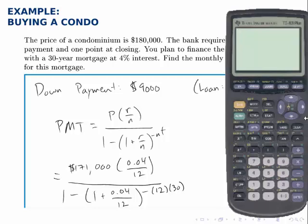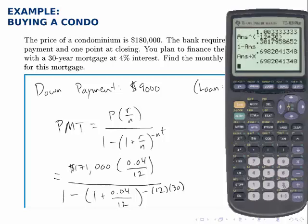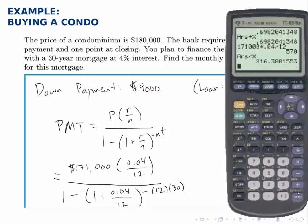So we fill in all those pieces and calculate what the expression equals. Starting in the denominator with the innermost parentheses: type in 1 plus 0.04 divided by 12, then raise that answer to the negative 12 times 30. Take 1 minus that answer — this is the entire denominator. Store that number, then calculate the numerator: 171,000 times 0.04 divided by 12, then divide by the stored denominator. The monthly payment amount is $816.38.